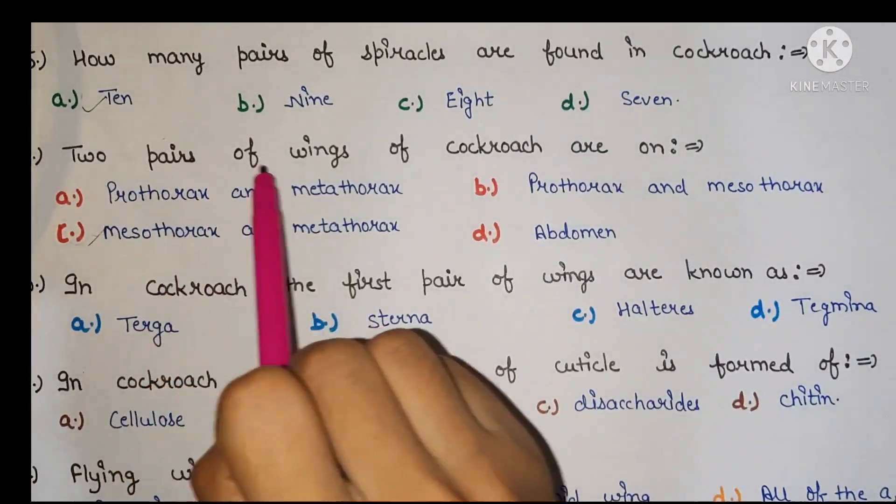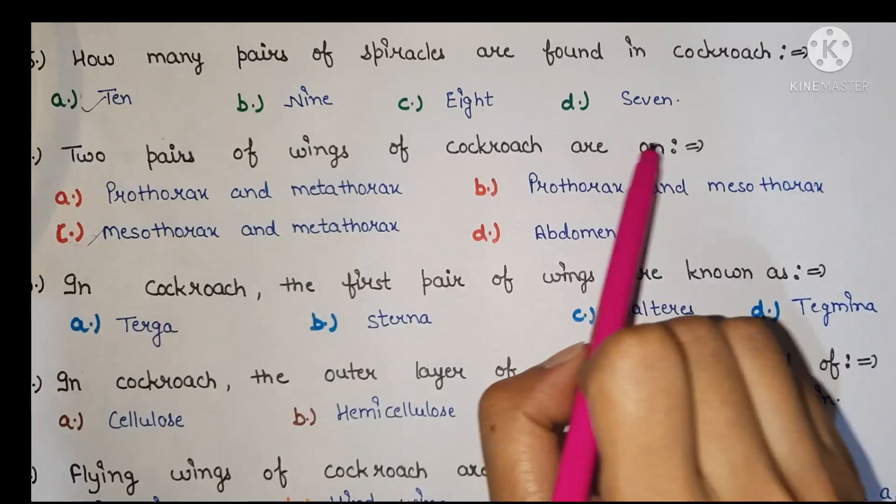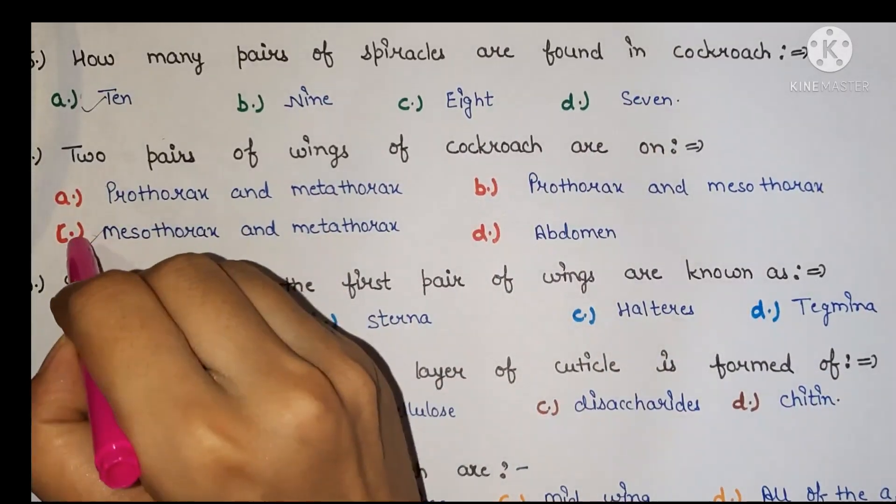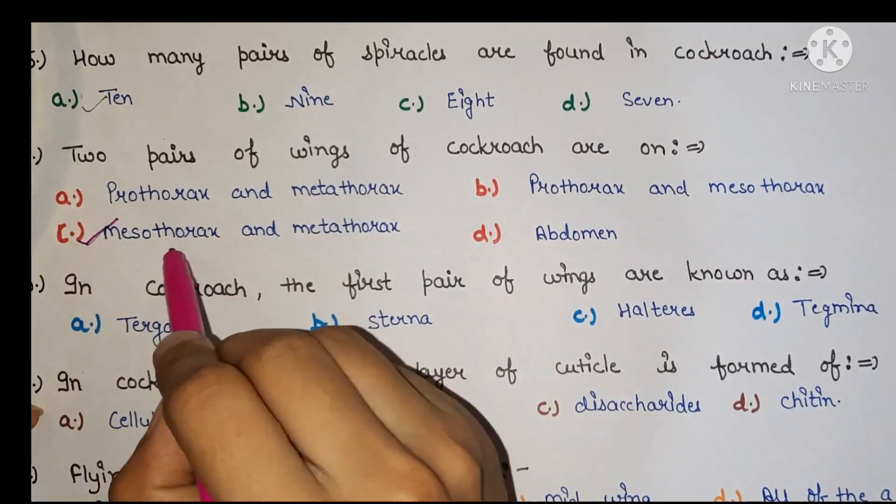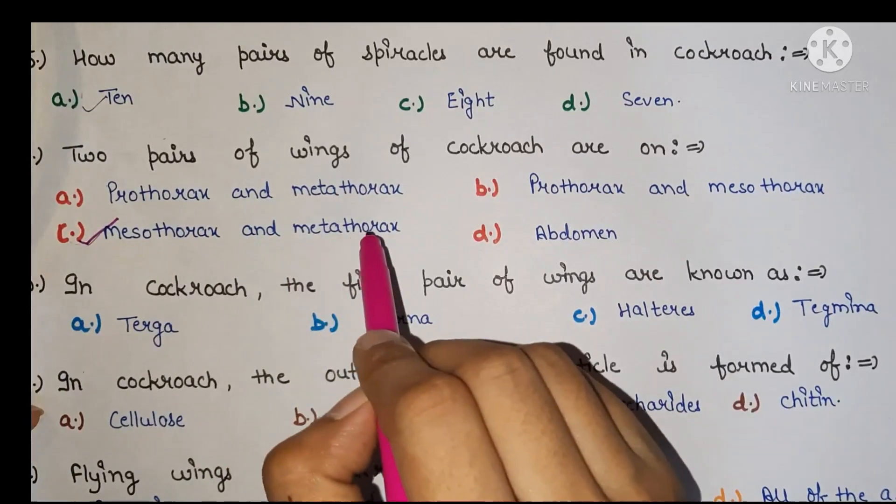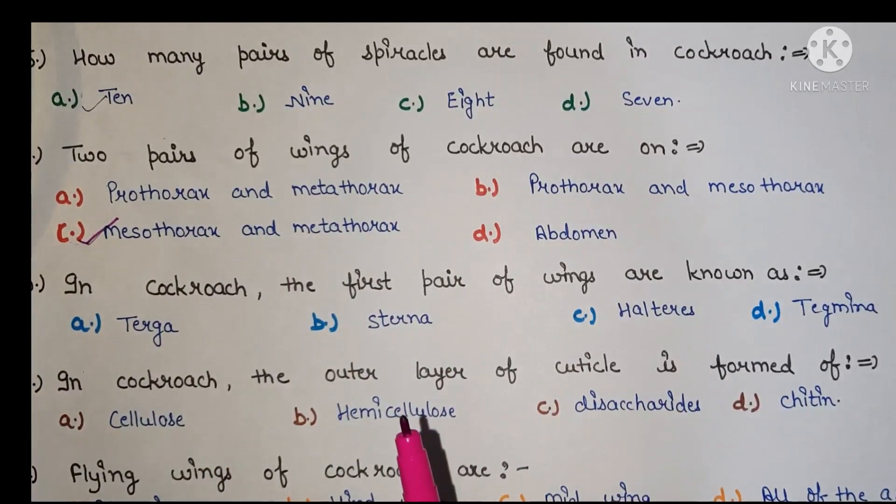Next, two pairs of wings of cockroach are on. The right answer is C, mesothorax and metathorax.